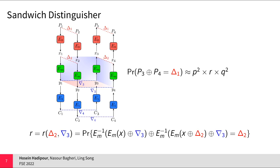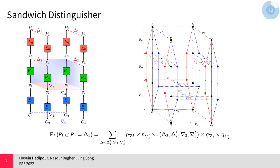In the sandwich distinguisher, instead of dividing the block cipher into two slices, we divide it into three slices: E0, EM, and E1, where the middle slice is used to model the dependency between the upper and lower differential transitions. The probability of getting delta1 on the other side is p squared times q squared times r, where r is the probability of sending a boomerang over the middle slice and getting it back. Taking the clustering effect into account, given that the intermediate differences delta2 and delta3 can take arbitrary values, we can estimate the probability more accurately as a summation over all possible intermediate difference values.